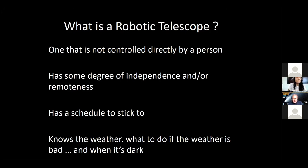Maybe, depending on where these telescopes are based in the world, it knows the weather in its location. I don't need to worry about the weather where the telescope is, because it either has its own weather sensors or it's linked into local weather sensors. It also knows what to do when the weather is bad. Clearly it knows what to do when it's dark, and when the sun is up it can sleep — as the rest of us do.